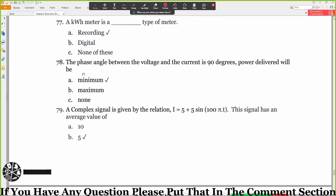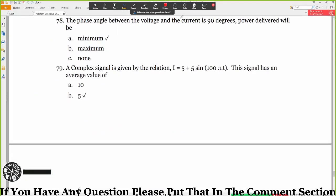Next, question 78: The phase angle between the voltage and the current is 90 degrees. The power delivered will be minimum. If this is zero degree, then you will be maximum.